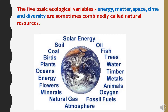The five basic ecological variables — energy, matter, space, time and diversity — are sometimes collectively called natural resources. Here we have given some examples of natural resources like solar energy, soil, coal, birds, plants, oceans, energy, flowers, minerals, natural gas, atmosphere, oil, fish, trees, water, timber, metals, animals, oxygen, and fossil fuels. All these are constituents of natural resources.